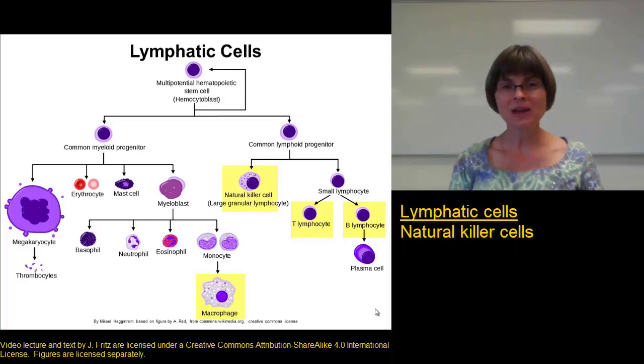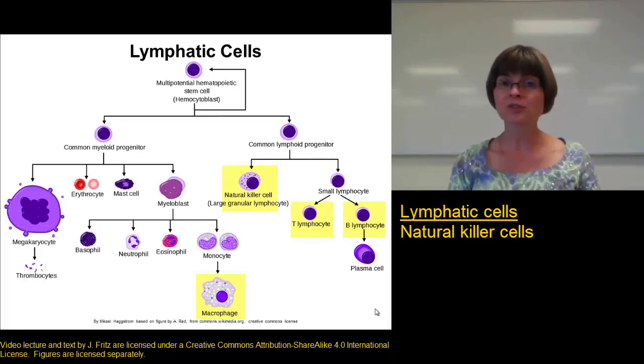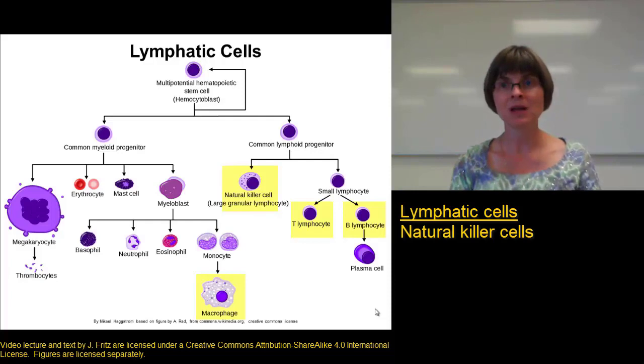Next, we have two types of lymphocytes: B lymphocytes and T lymphocytes, which we'll discuss in more detail when we get to the immune system. But these are part of the lymphatic system — we find them in the lymphatic organs.